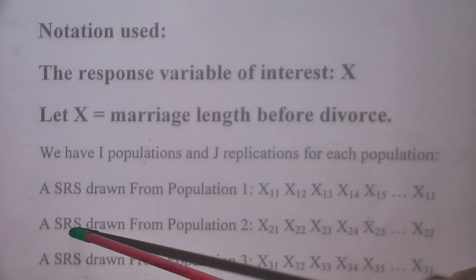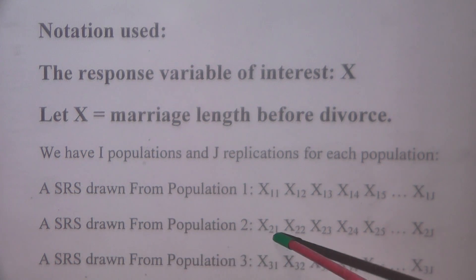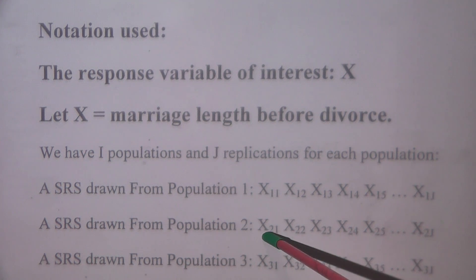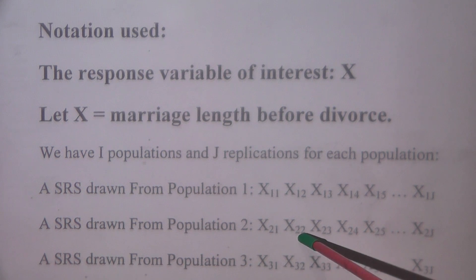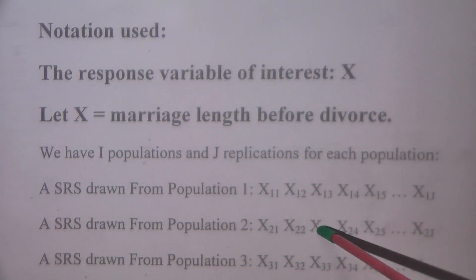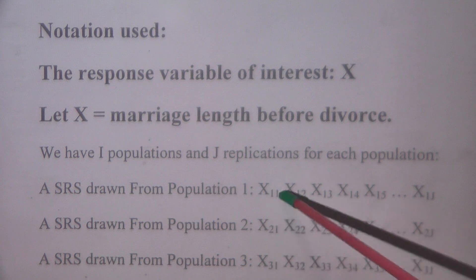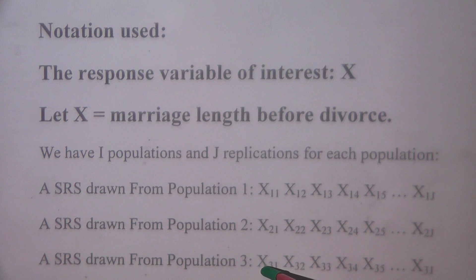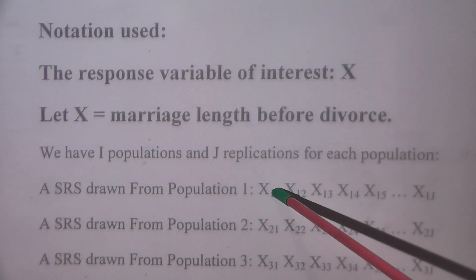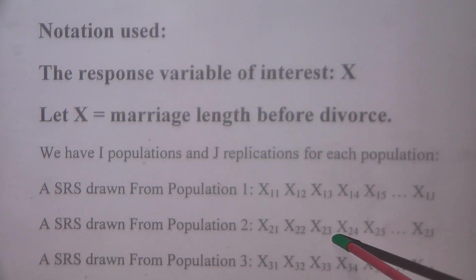A simple random sample from population two gives us the first couple of their second marriage, the second couple — we observe how long they last for their second marriage. And a simple random sample drawn from population three: we look at the first couple of their third marriage. Remember, these three simple random samples are independent — this couple has nothing to do with any couple in the other samples.